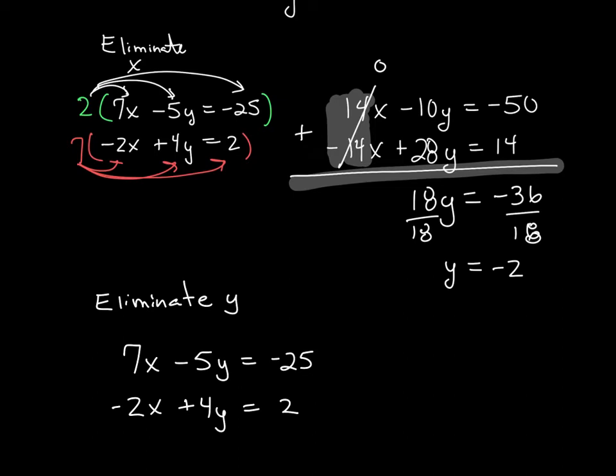If I want to eliminate y, I'm going to multiply this first equation by 4 and the second equation by 5. I'm keeping the signs the same because currently the 5s, one has a positive and one has a negative.